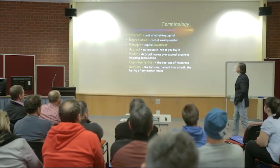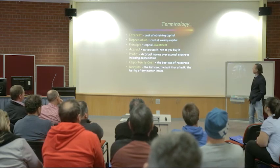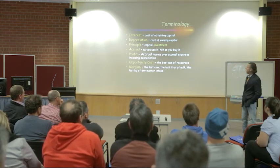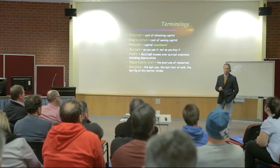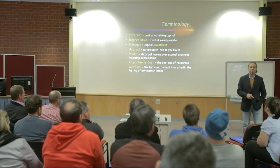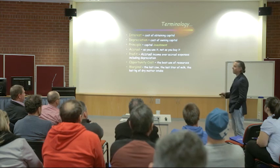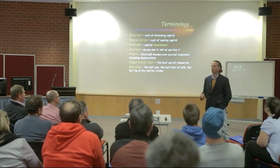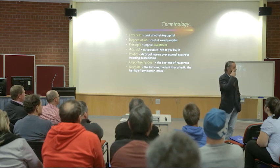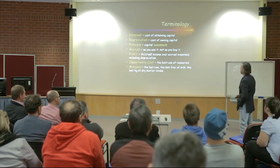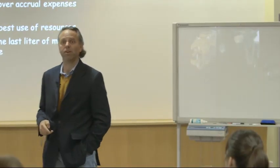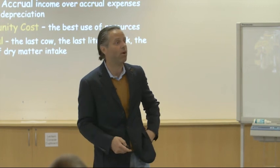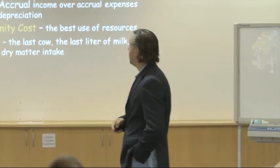Profit is accrual income over accrual expenses, including depreciation — that's our net number on the P&L. Opportunity costs we'll talk about a bit — kind of the best use of resources — and particularly in your system I think that has some important implications. Lastly, marginal is the last cow, the last liter of milk. The last cow you add to your dairy is by far the most profitable cow in almost every case. The last liter of milk you can get out of your cows is frequently the most profitable because you're diluting fixed costs. That principle typically works very well on most dairies — the only exception is if you fed an extraordinarily expensive grain that converted very poorly, and that's why you've just got to do the math to figure out if it makes sense.